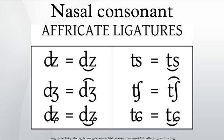Examples of nasals in English are n and m, in words such as nose and mouth. Nasal occlusives are nearly universal in human languages. There are also other kinds of nasal consonants in some languages.